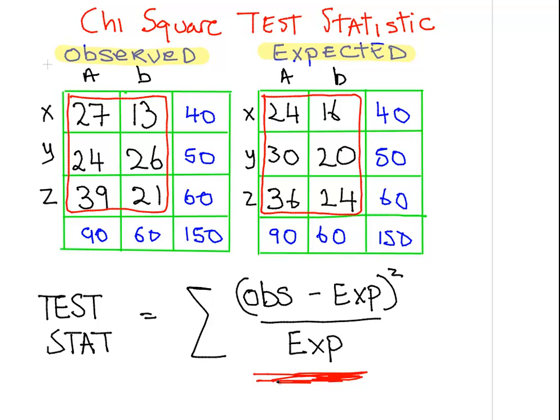So what I'm going to do now is calculate the test statistic. There's six very similar calculations. And I'll just give you the start here. For the first one what we're going to do is take 27, that's the observed value for x and a, and we're going to subtract the expected value for that cell, 24. So it is 27 minus 24 squared.